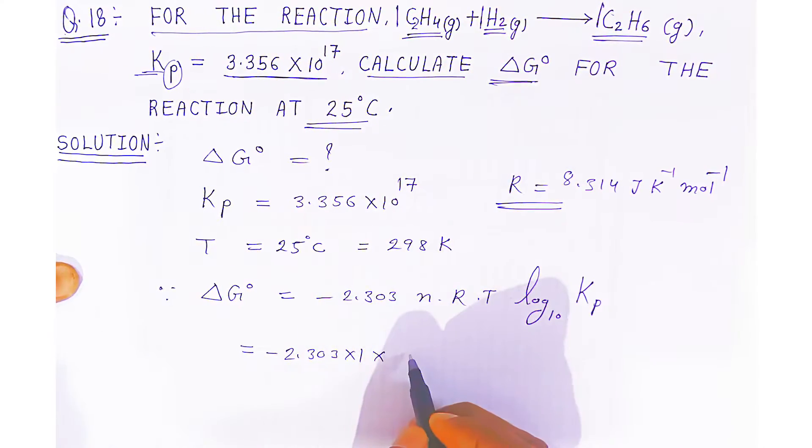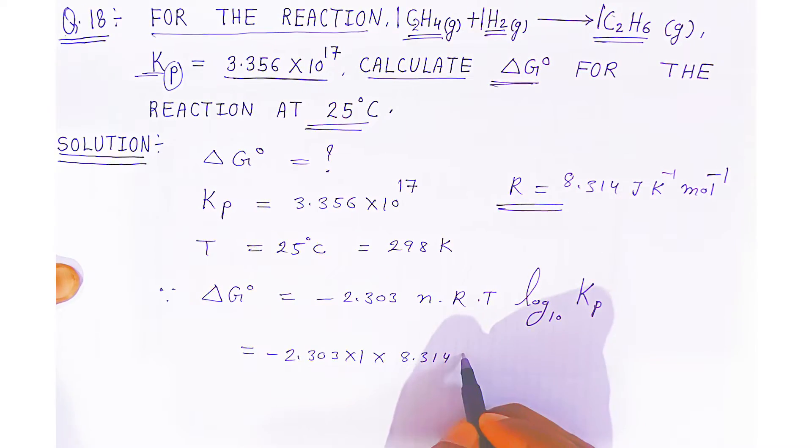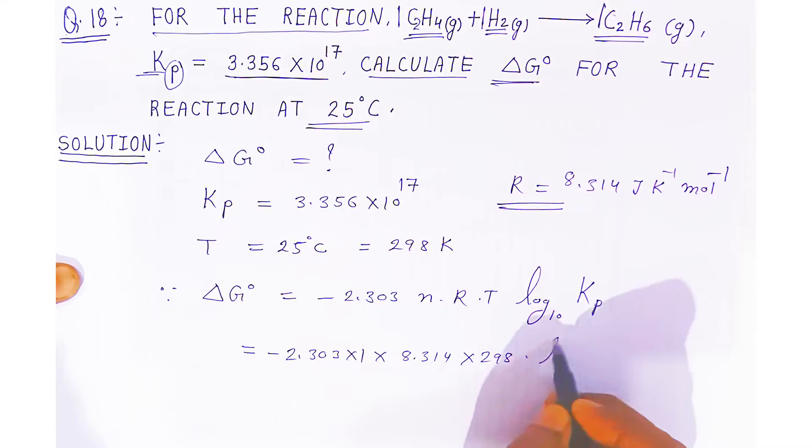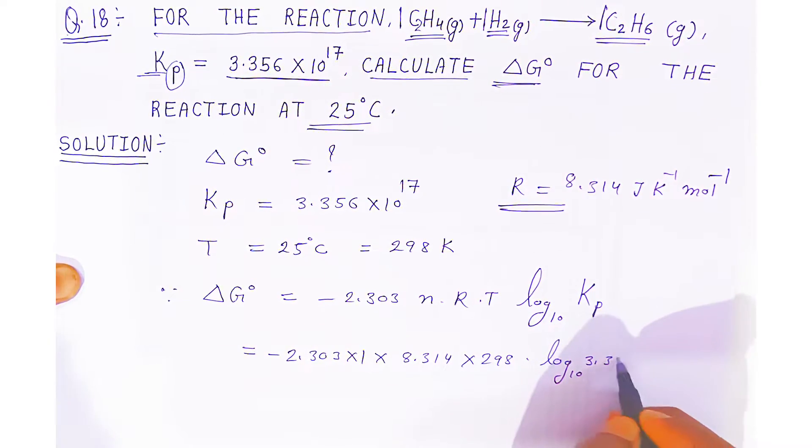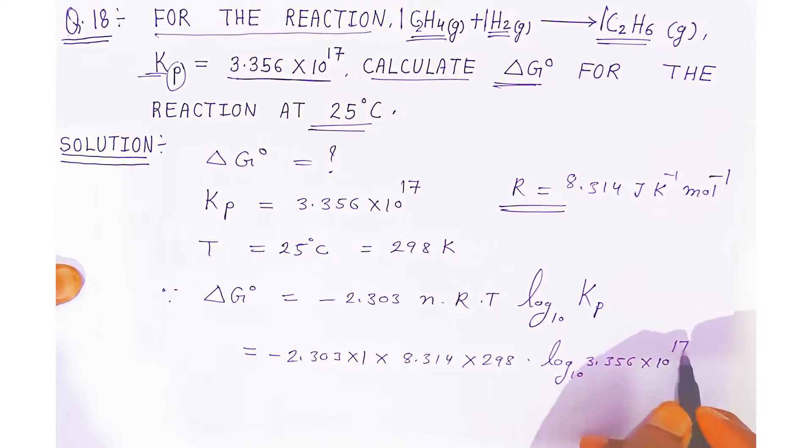Now put the value: 8.314, multiply by the temperature 298 Kelvin, and take the log₁₀ of 3.356 × 10^-17.